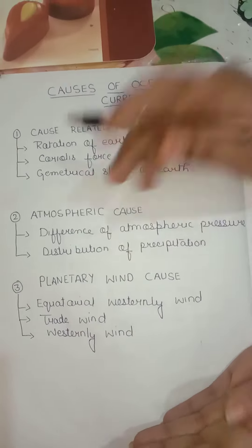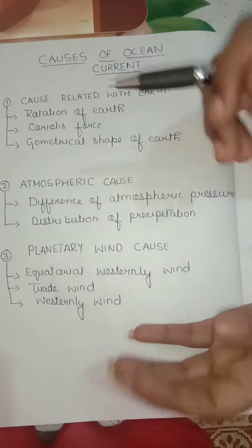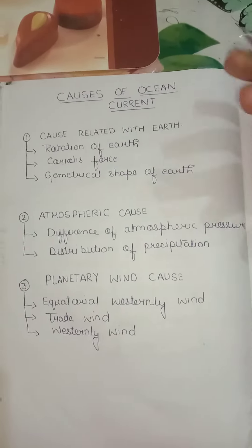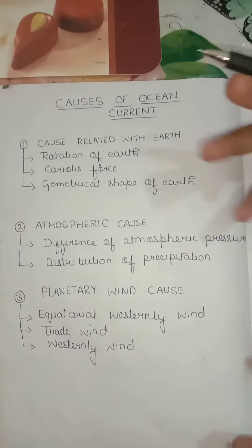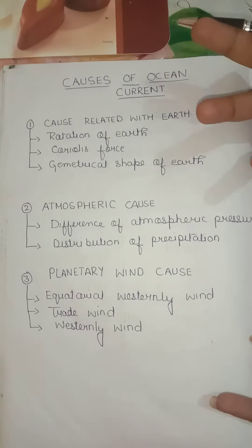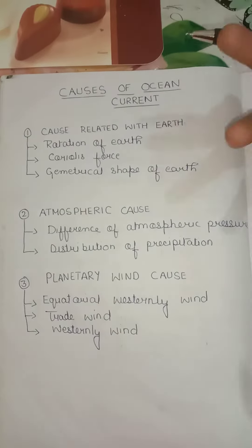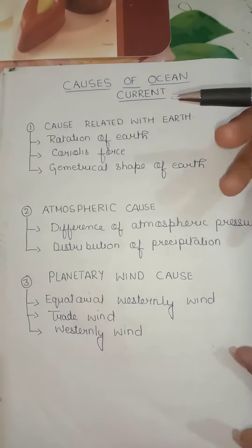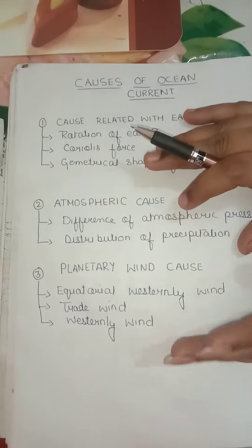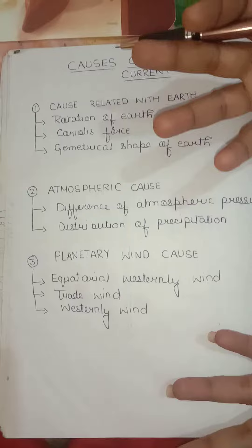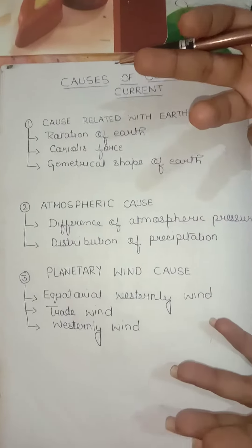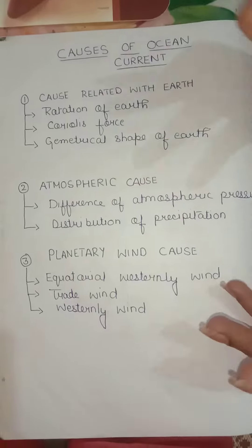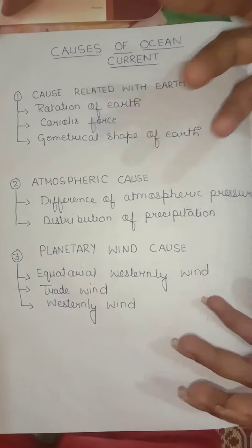Now let us discuss in simple words. First, solar heating causes water to expand. Second, wind is responsible for ocean currents as it blows water on the surface, causing the current. Third, gravity tends to pull items towards the surface of the Earth.